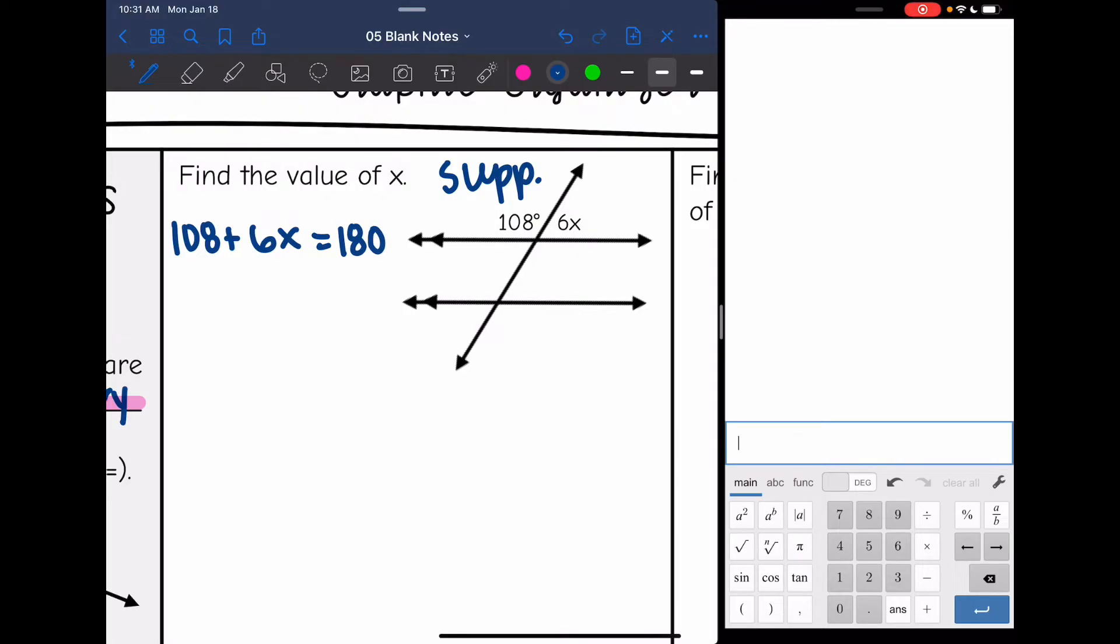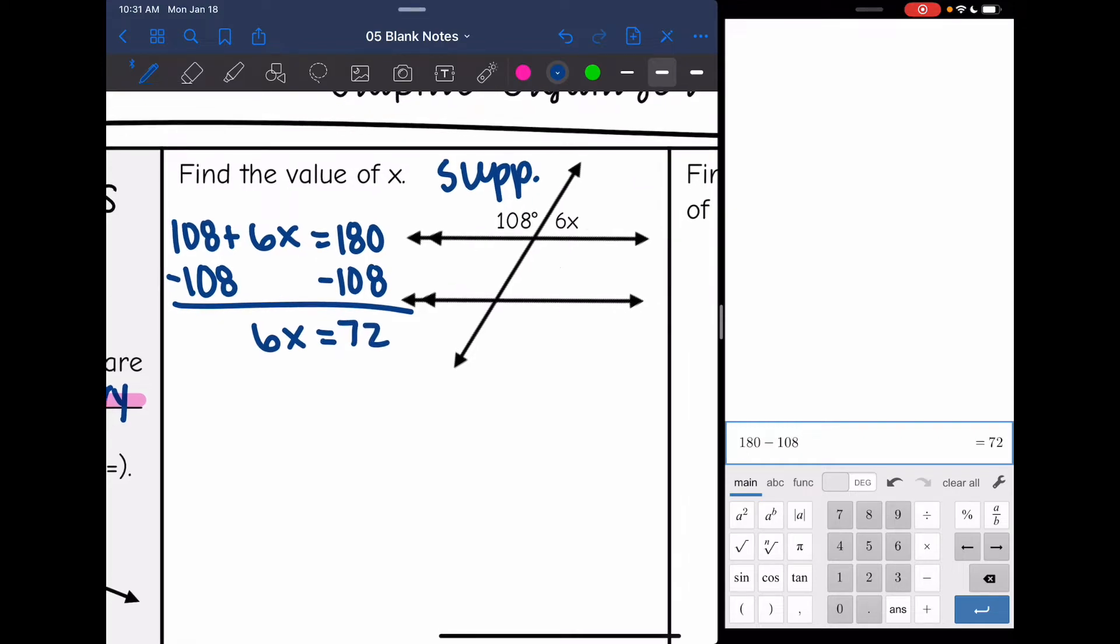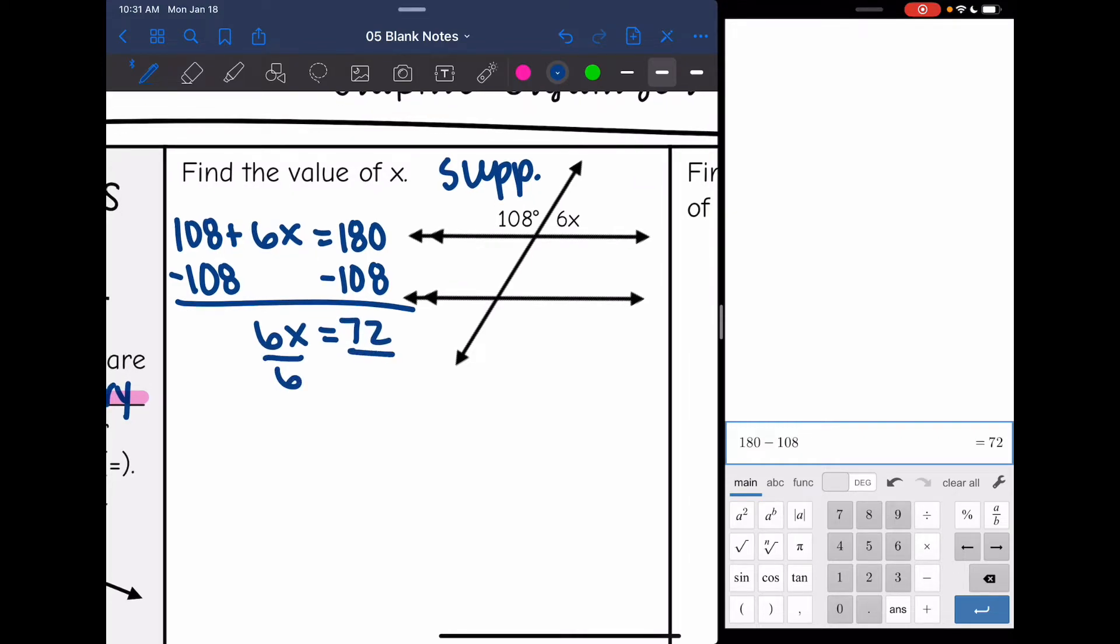And now I can find x by subtracting 108. And I get 6x equals 180 minus 108 is 72. And then I divide by 6, and x is 12. And that's all it asked me to find on this one, so I am done.